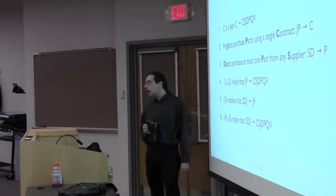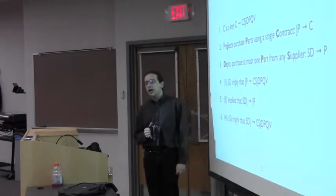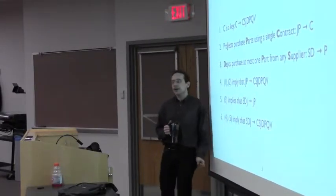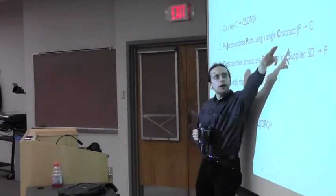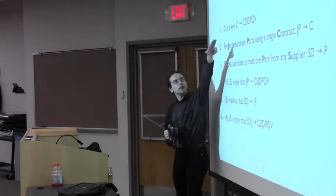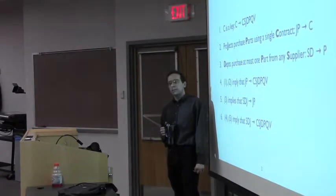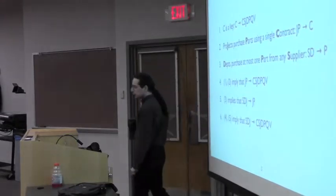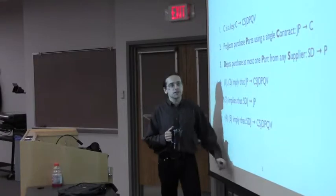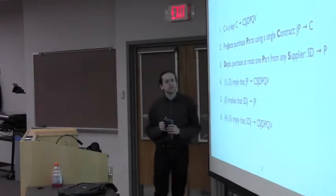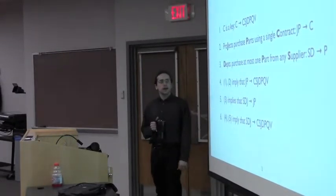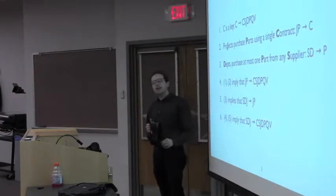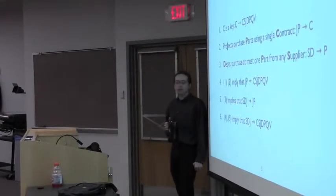We can also say — through domain knowledge — that if for every part purchased by a specific project there is always exactly one contract, then we can infer a functional dependency from JID and PID to C. Or if each department purchases at most one part from any given supplier, then PID depends on supplier and department. From these, we can cascade and combine functional dependencies in various ways.